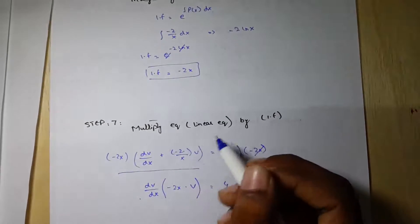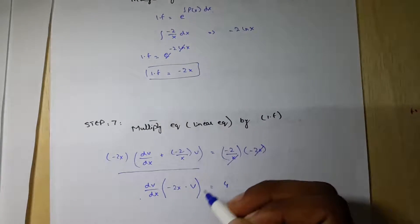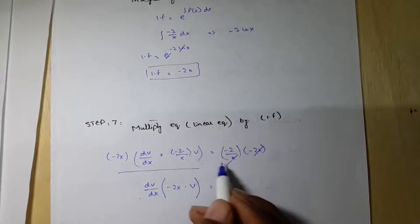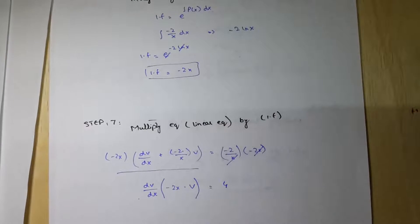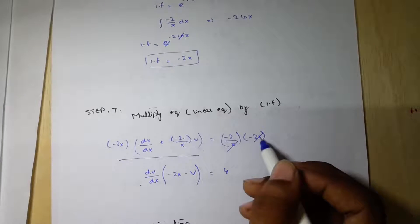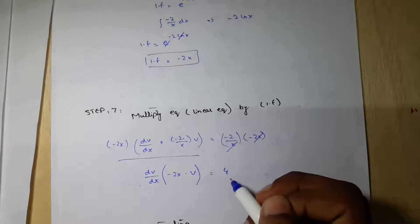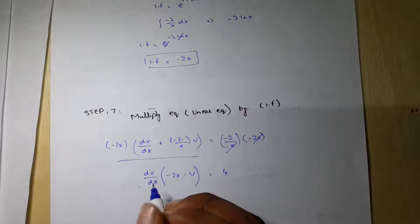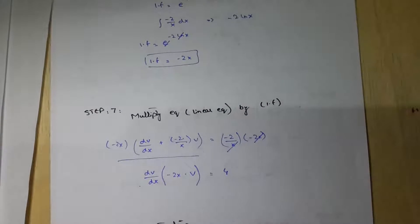Step 7: multiply the linear equation by the integrating factor. This is our linear equation and this is our integrating factor. These terms can be cancelled, so minus 2 multiplied by minus 2 equals 4, and the whole expression becomes dv/dx minus (2/x)v, which is the independent variable.